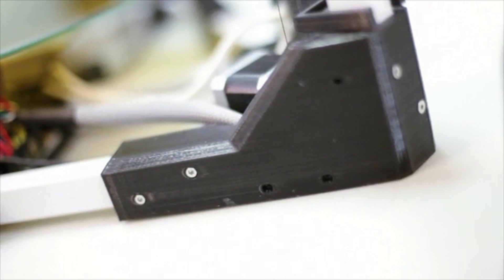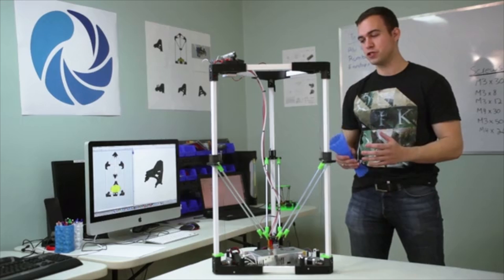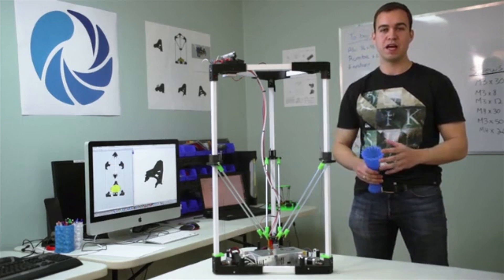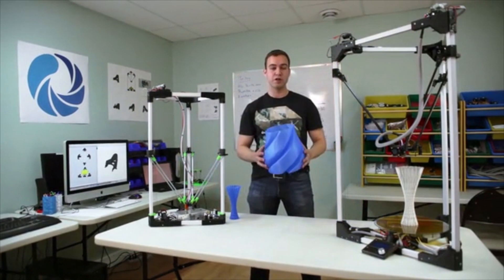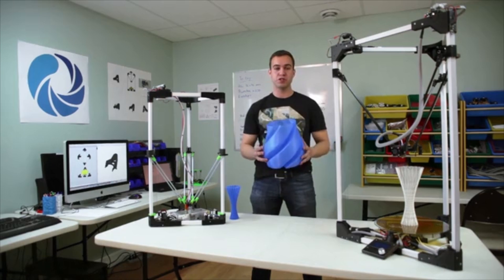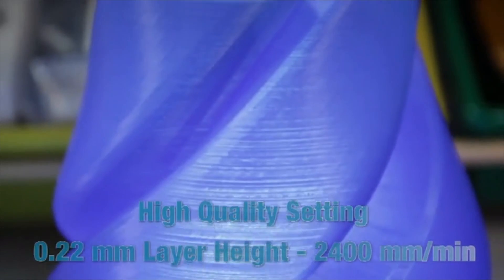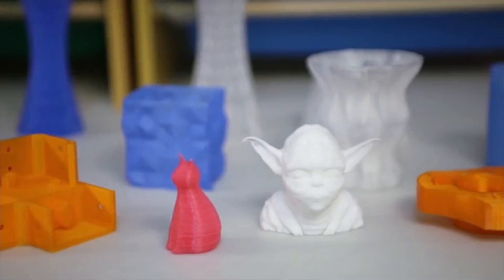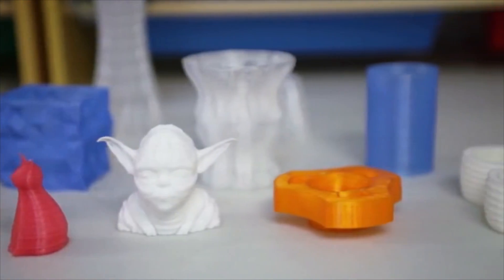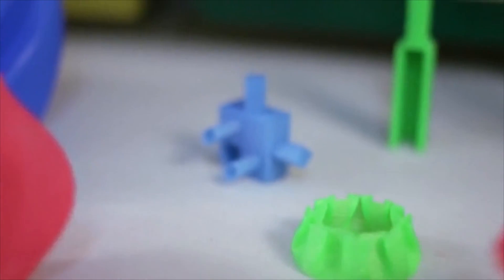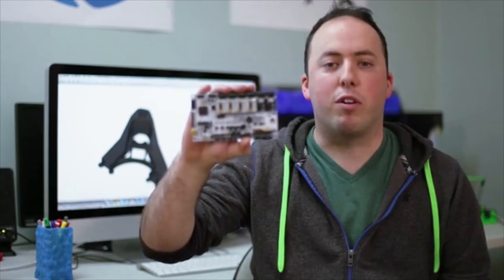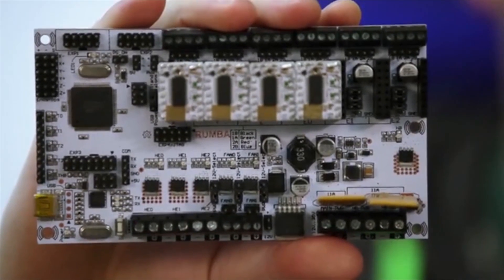The earlier versions had a really small build volume. That's why we've moved to a much larger 300 by 300 millimeter build volume, which allows you to build virtually any object. We're using the RUMBA board to drive our printer, which means you can use up to three extruders and plenty of accessories.